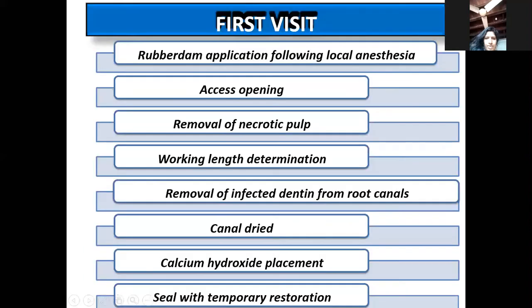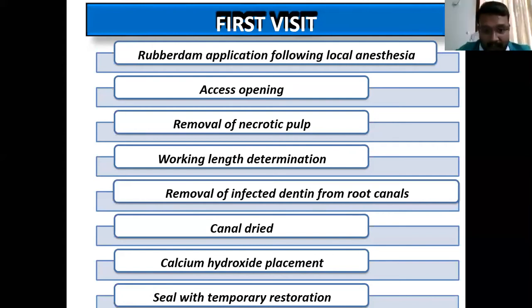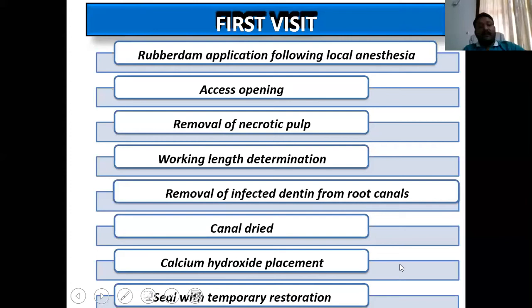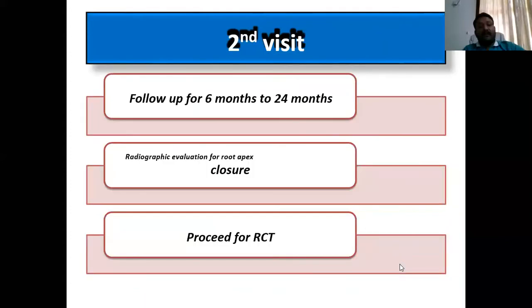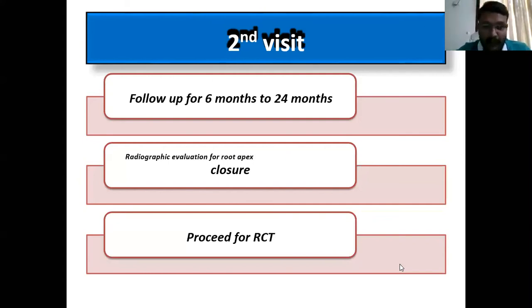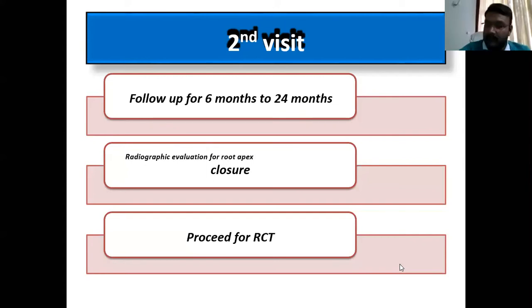First visit steps with calcium hydroxide: rubber dam isolation, access opening, removal of necrotic pulp, working length determination, removal of intracanal debris, placement of calcium hydroxide at the working length, and placement of a temporary restoration. Second visit: follow up at six months and 24 months based on apical closure. Evaluate by taking a radiograph, comparing to the previous radiograph to see the difference, checking if root formation and apical closure is progressing properly. If everything is fine, proceed with root canal treatment.